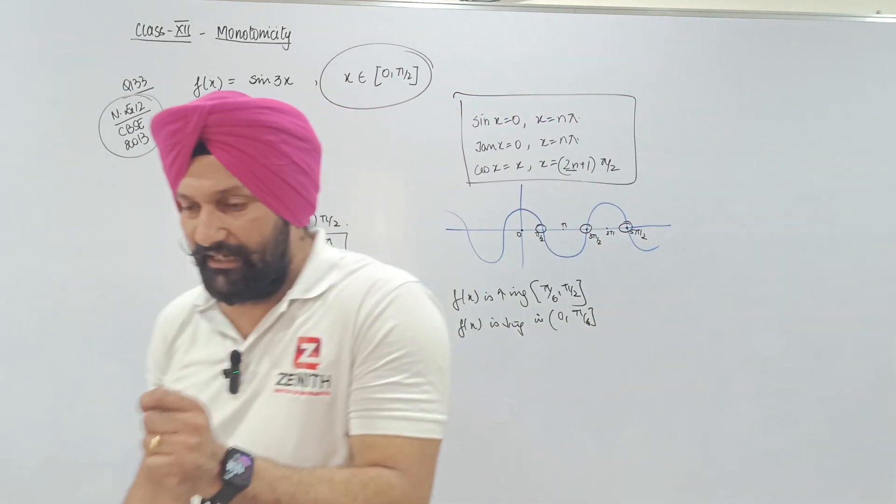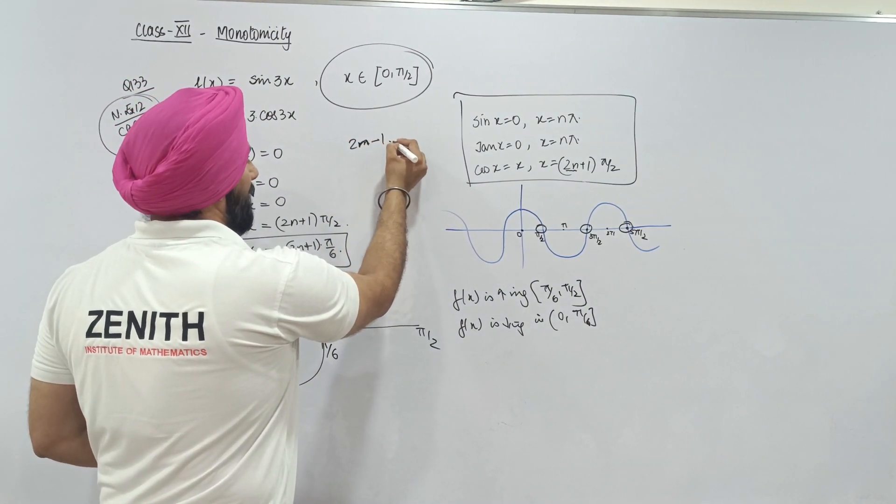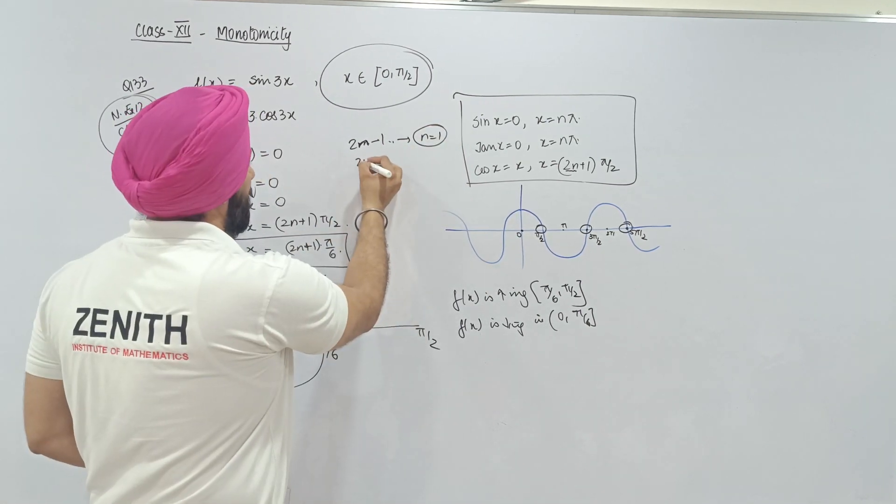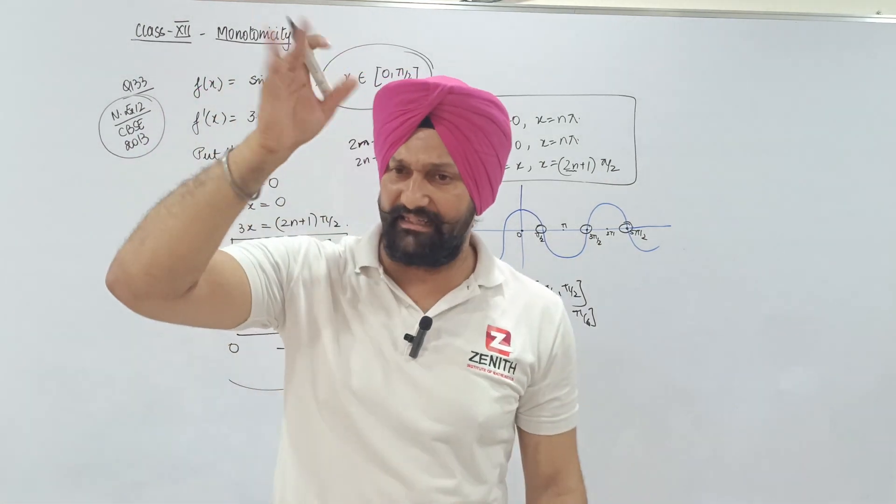This is a thing that you should understand. Whenever you have 2n minus 1, then you will start putting the n on 1. And when you have 2n plus 1, then you will start putting the n on 0.